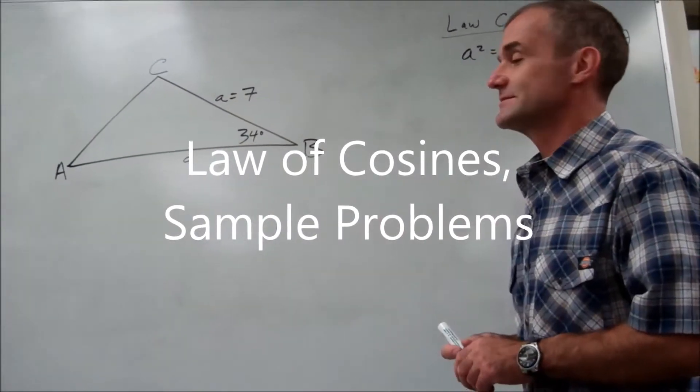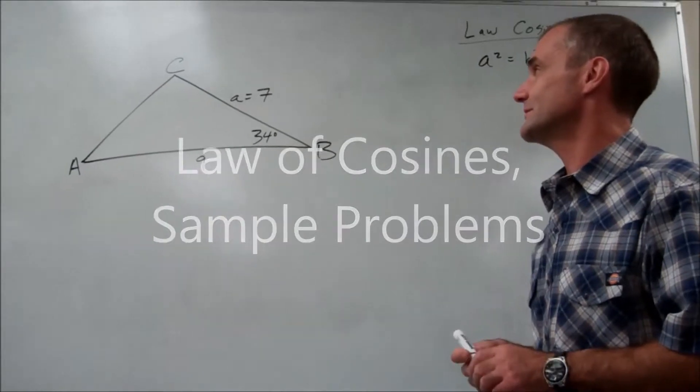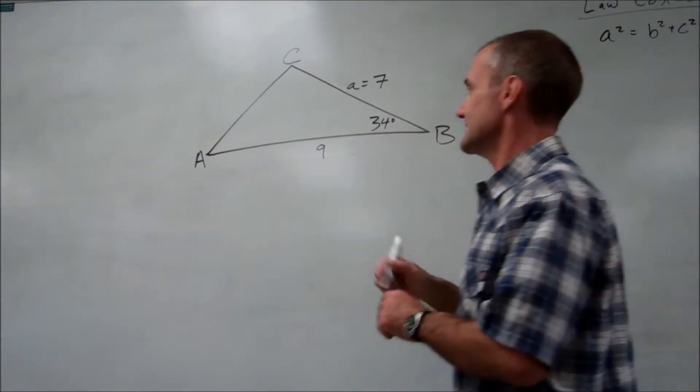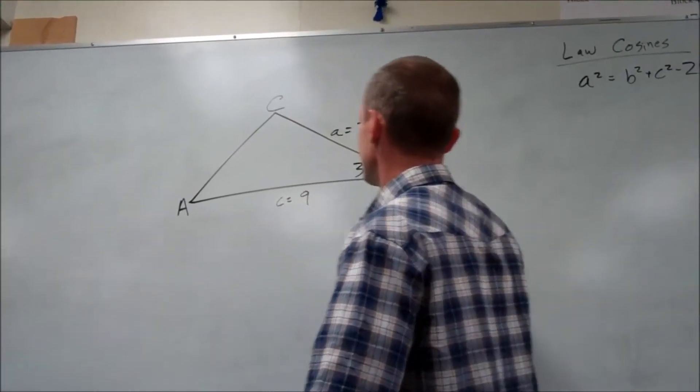Okay, so it's in your book. This is section 5-2, number 2. It gives you side A is 7, side C is 9, angle B is 34.